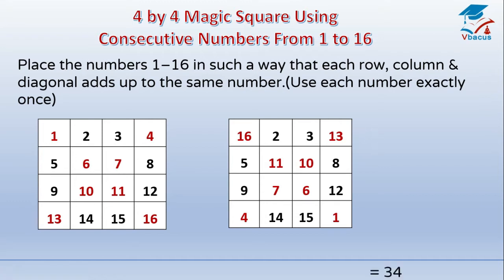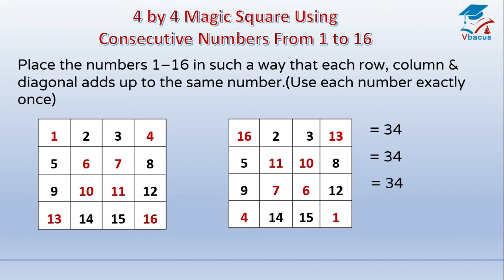Now we will add up — the answer will be the same. 16 plus 2 plus 3 plus 13 is equal to 34. 5 plus 11 plus 10 plus 8 is equal to 34. 9 plus 7 plus 6 plus 12 is equal to 34. 4 plus 14 plus 15 plus 1 is equal to 34. Now let us see column wise.